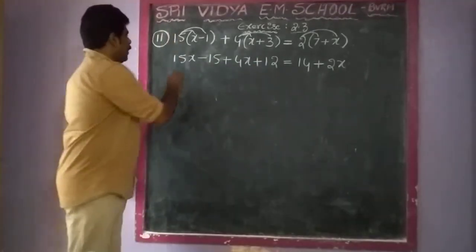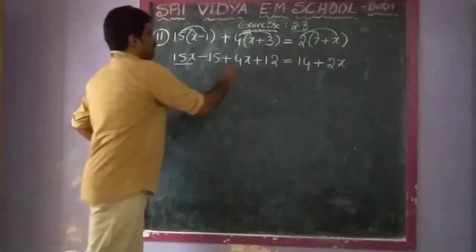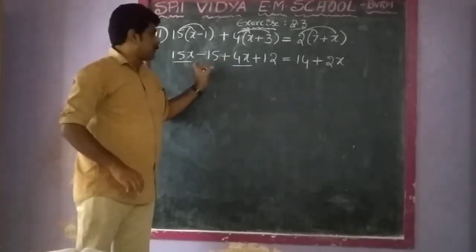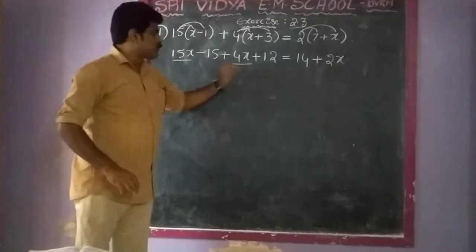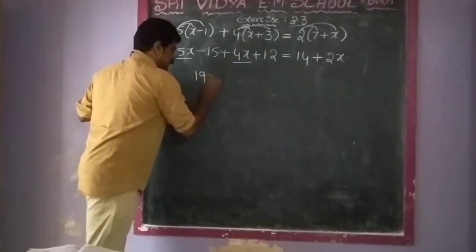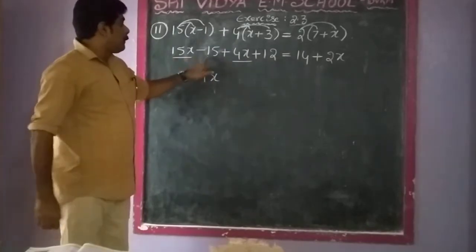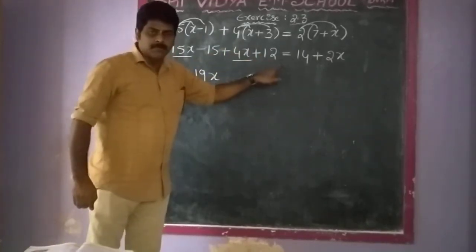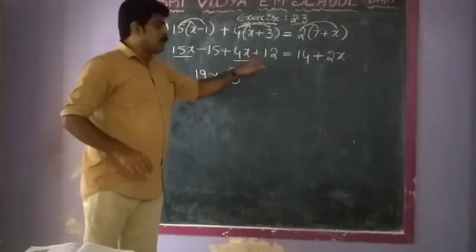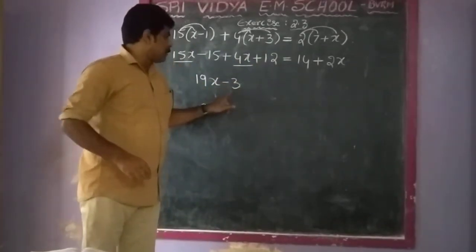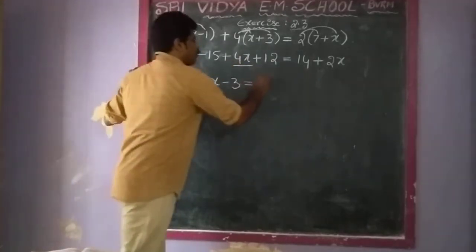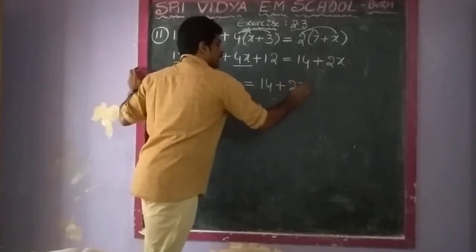This is why: 15x and 4x are the variable terms. First simplify: 15x plus 4x — opening it gives 15 plus 4 equals 19x. And minus 15 plus 12 — opening it gives minus 3. So 19x minus 3 is equal to 14 plus 2x.